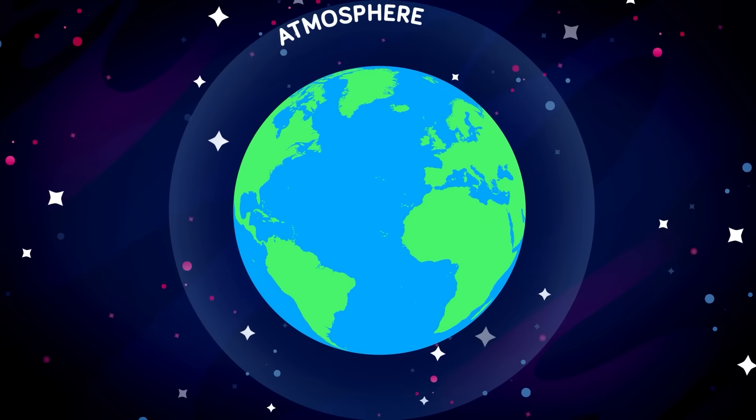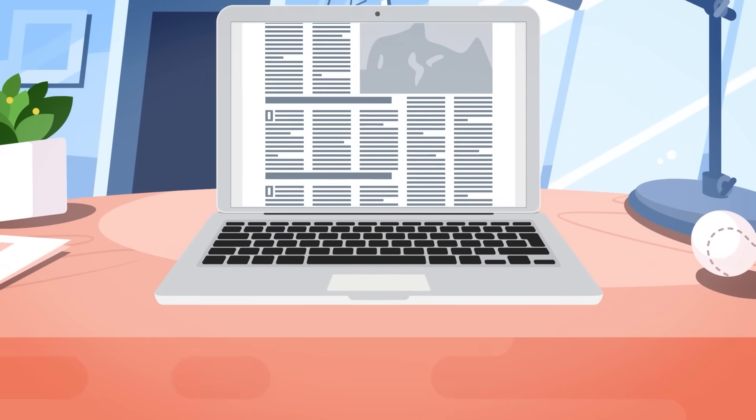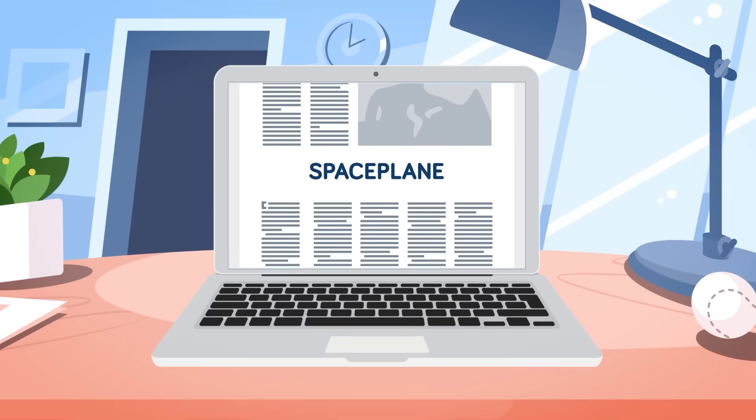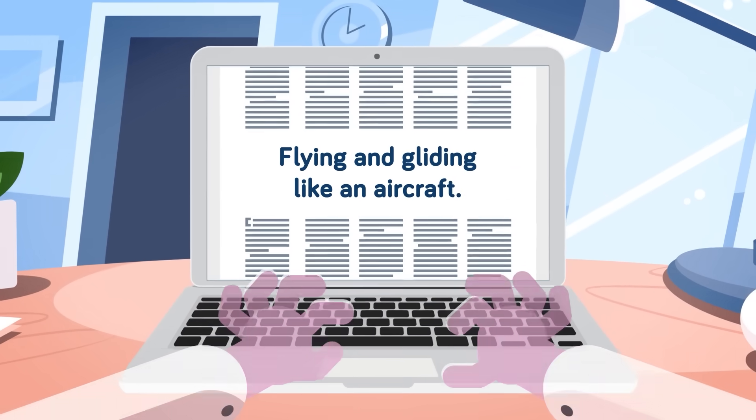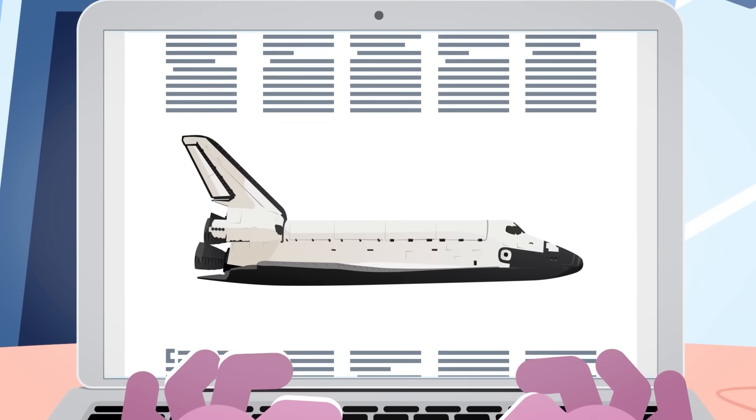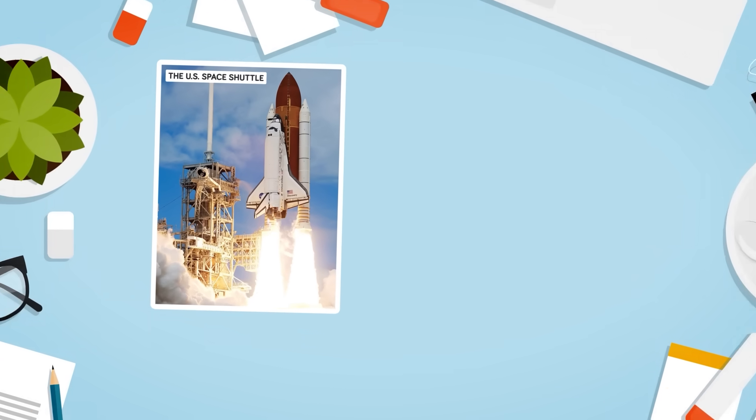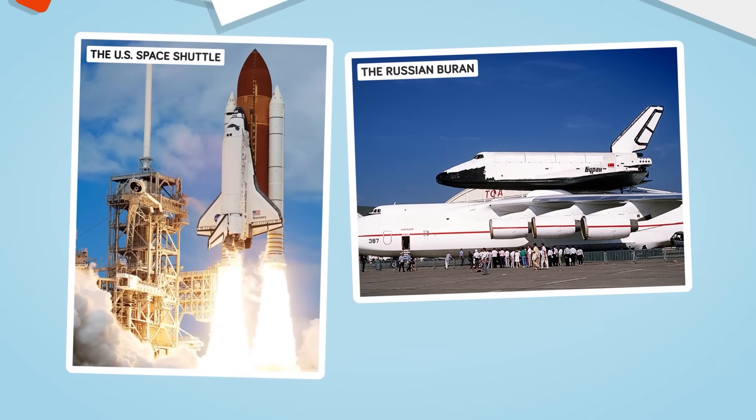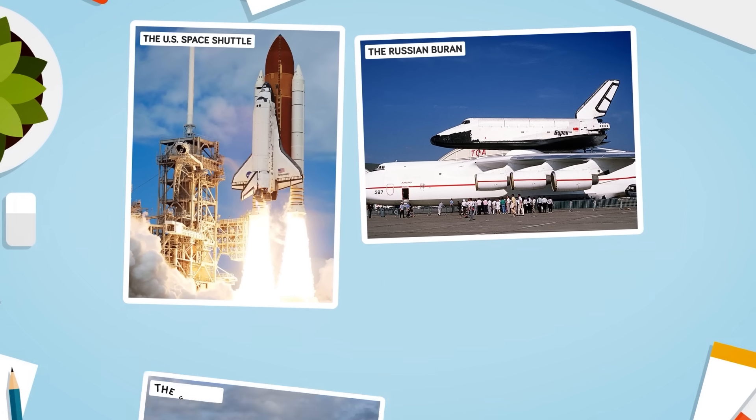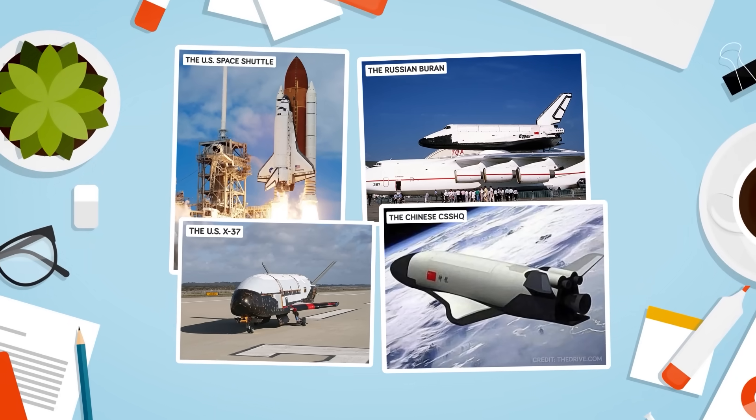So we know that airplanes can't fly to space, but there are actually a type of plane that can. That's right, you guessed it: space planes. A space plane is a vehicle capable of flying and gliding like an aircraft while in Earth's atmosphere, and moving like a spacecraft once it's exited the atmosphere into outer space. It's sort of the best of both worlds. There are four types of space planes that have successfully launched into orbit, re-entered the Earth's atmosphere, and landed safely: the US Space Shuttle, the Russian Buran, the US X-37, and the Chinese CSSHQ, or Reusable Experimental Spacecraft.